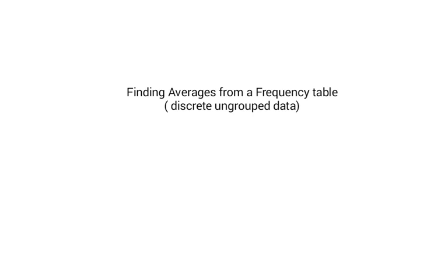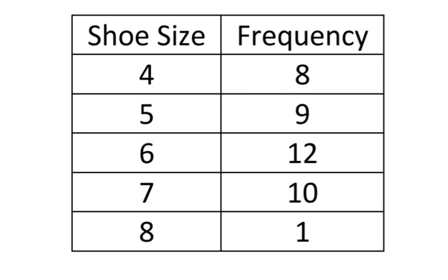In this revision tutorial we're going to be finding averages — mean, median and mode — and also the range, which isn't an average, from frequency tables. This frequency table is all about shoe sizes. The shoe sizes collected were size 4, 5, 6, 7 or 8. Our mean, median and mode should be numbers from the data side, not the frequency side. A common mistake is that people use the wrong column — it's the shoe size data we want, not numbers like 12.